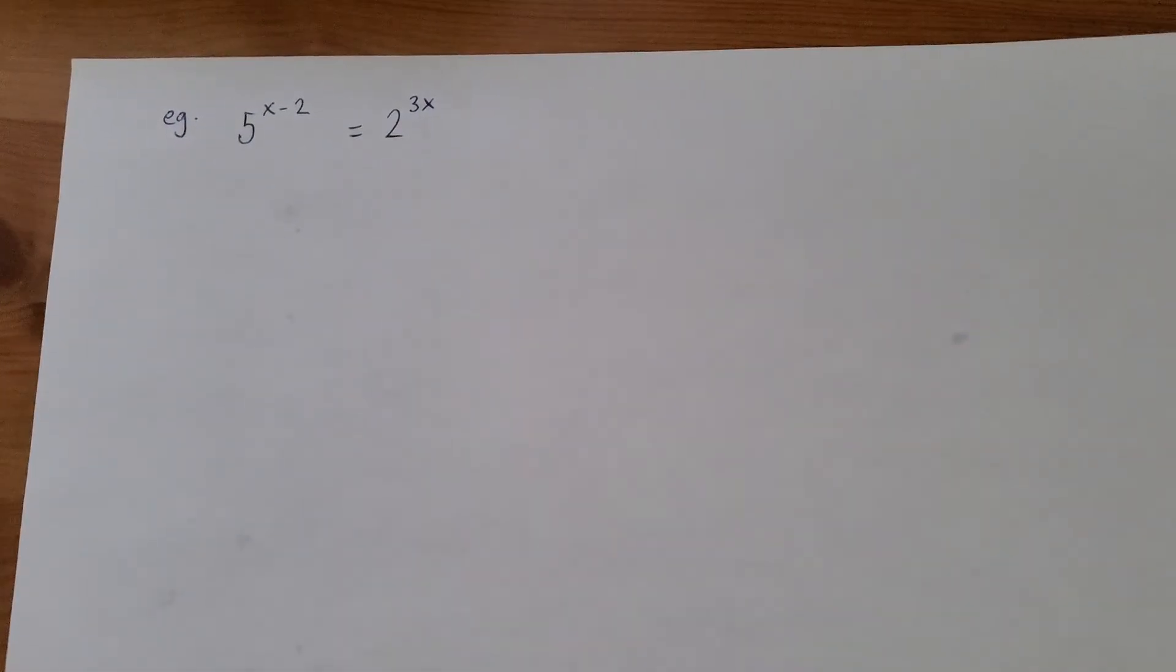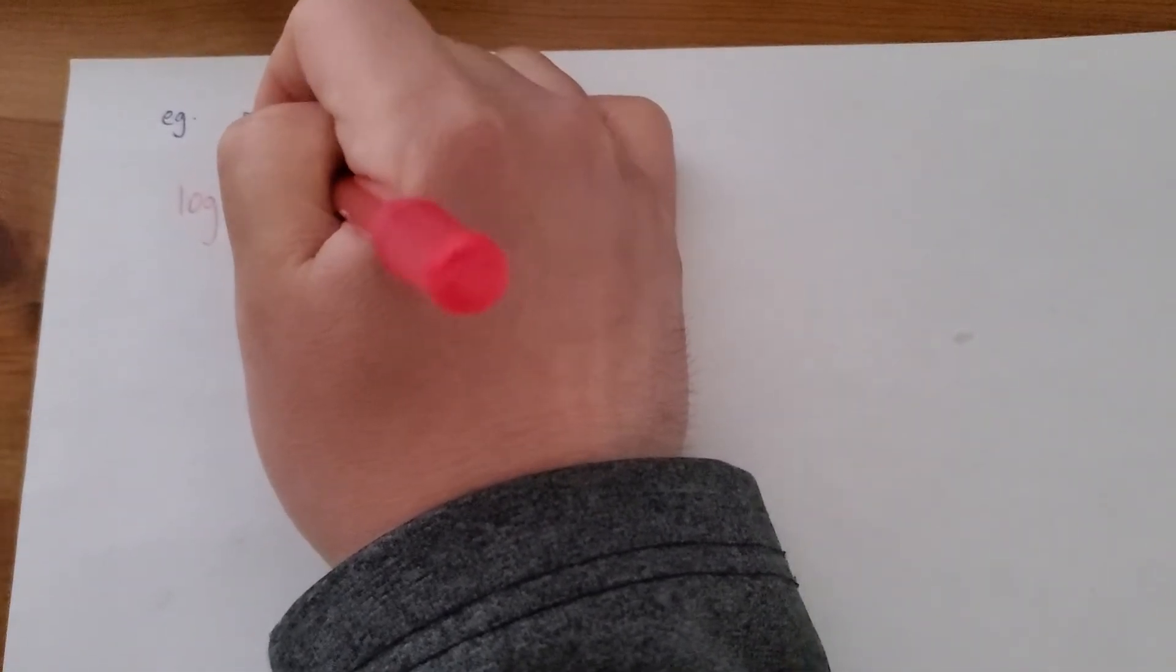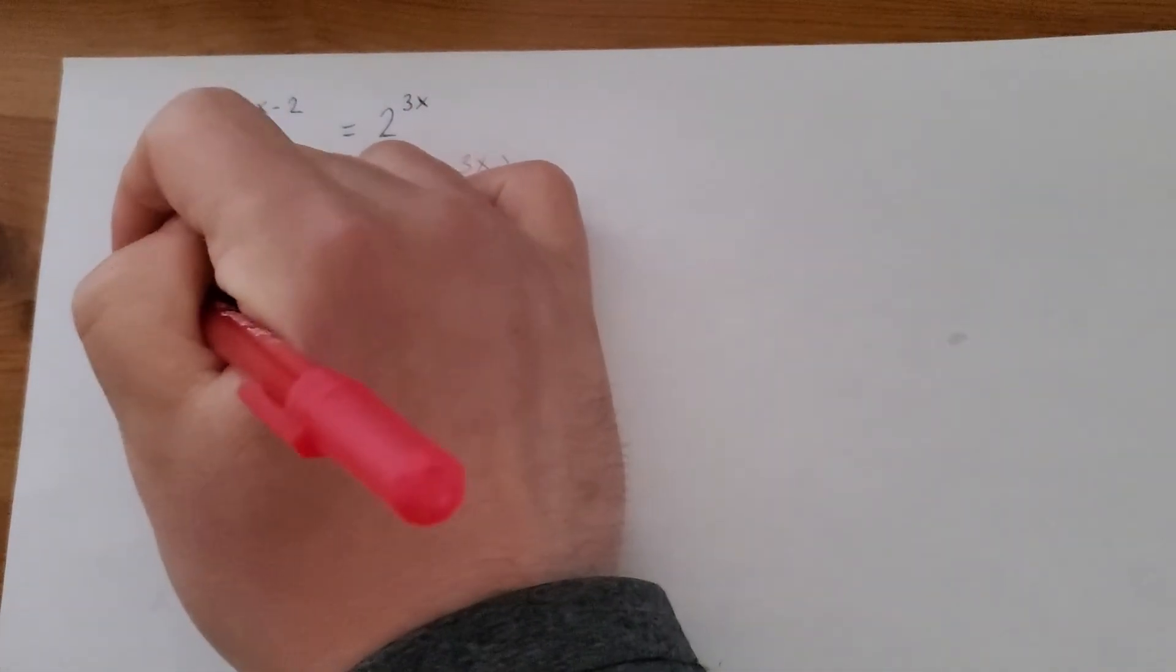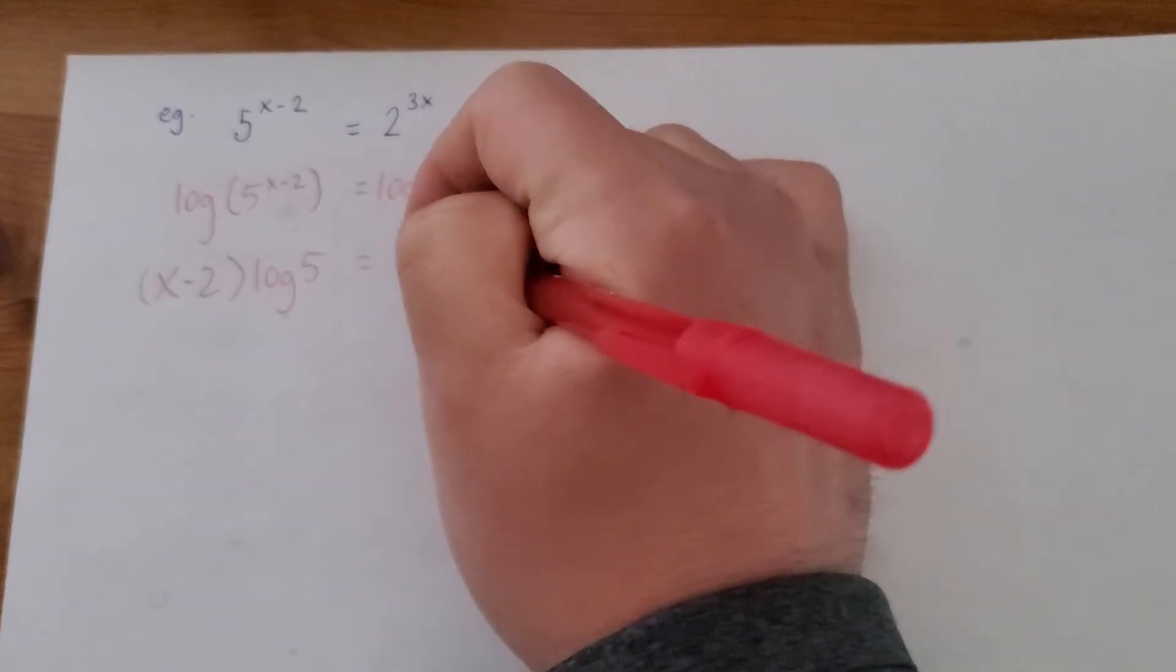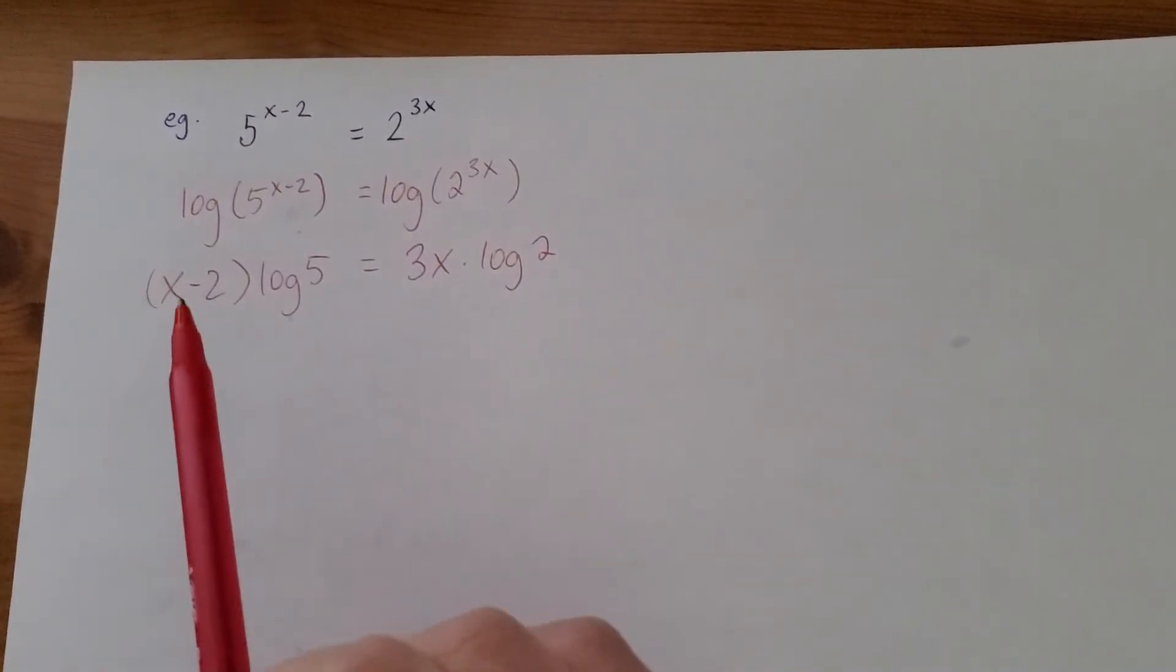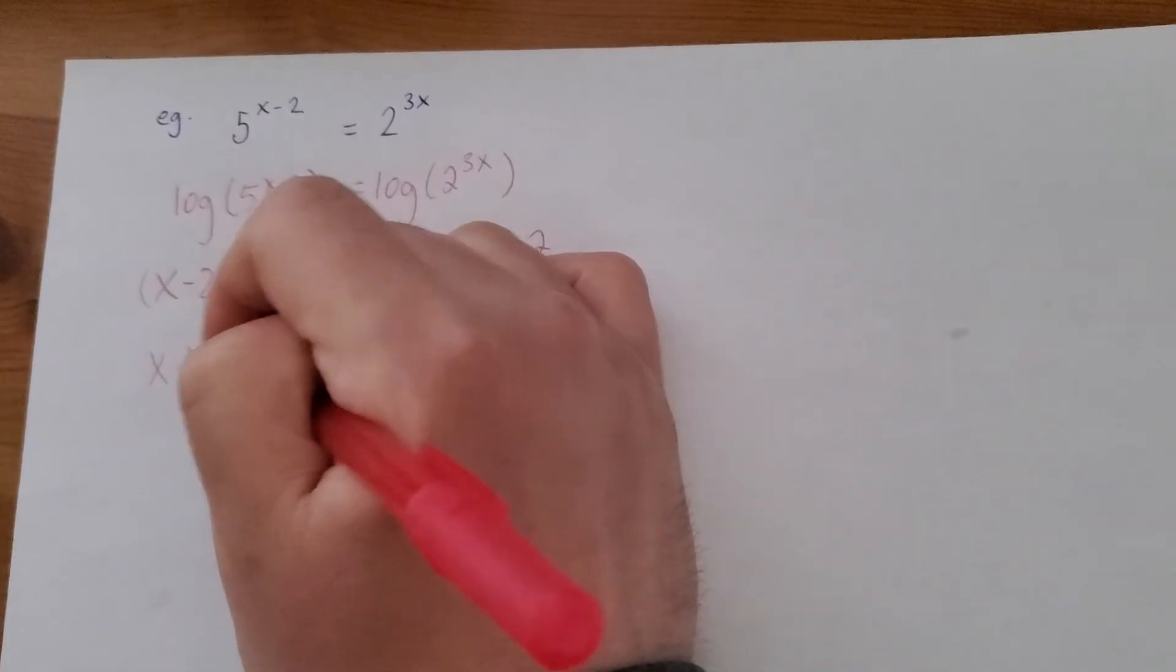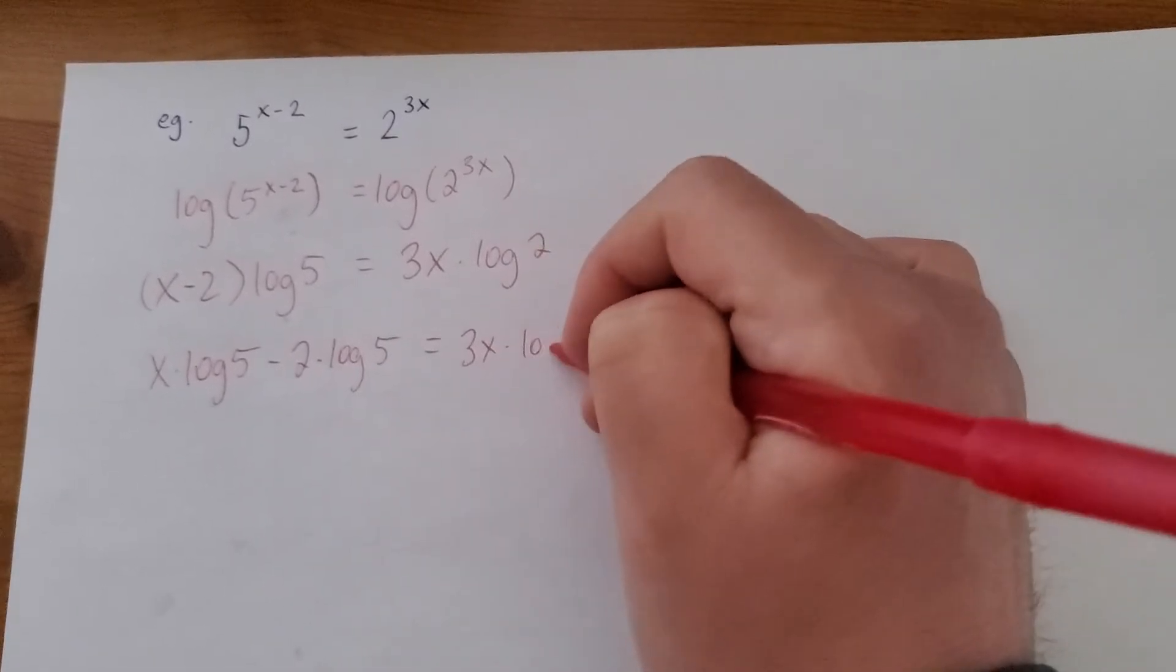So this one has exponents on both sides, but steps are the same. So I've taken the log of both sides. Exponents out in front. So I have to distribute here because I've got terms separated by a plus or minus sign. So this is going to become x times log 5 minus 2 times log 5. The right side I'm just going to leave alone for now.